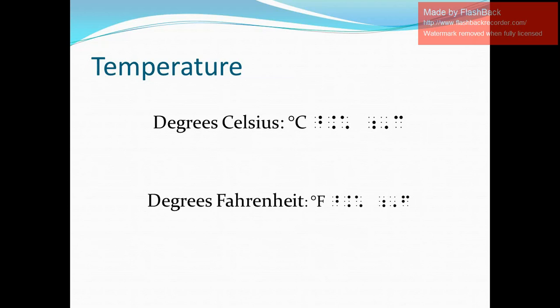Now moving on to Fahrenheit, the Nemeth Braille code for Fahrenheit has also six or seven cells. So for the first cell we have dots four and five, next four six, next one six, space, letter indicator dots five and six, dots six, and finally letter F.